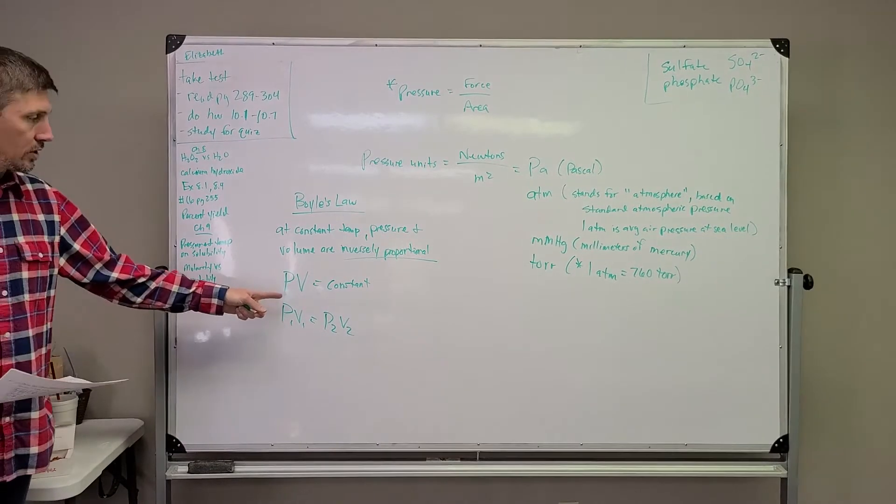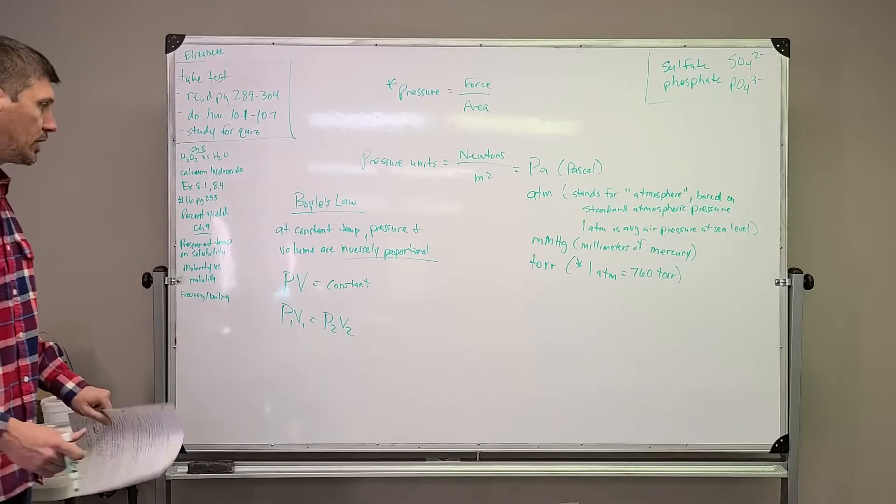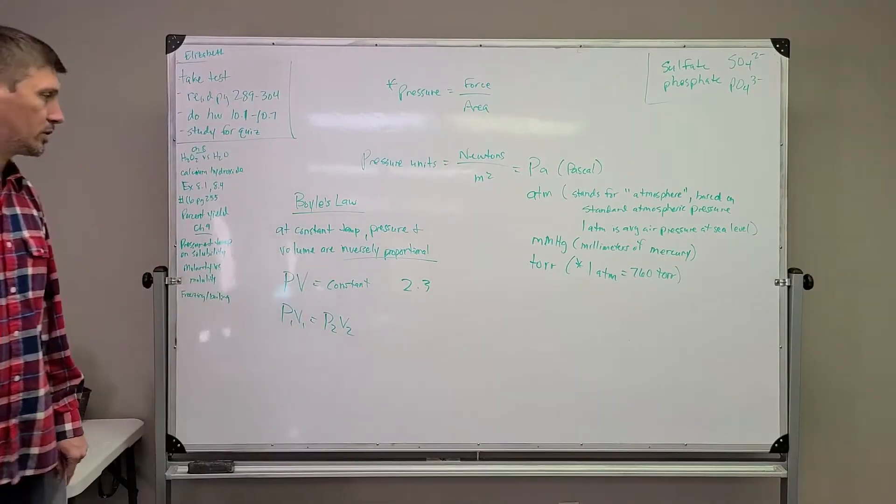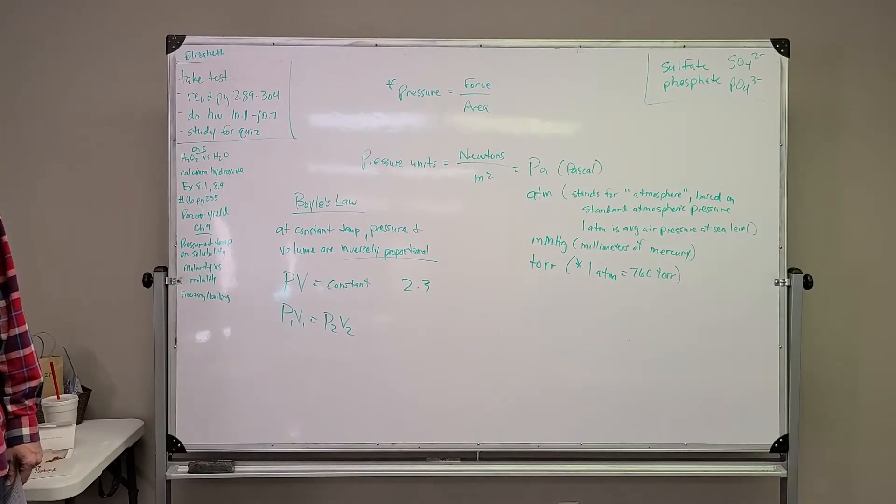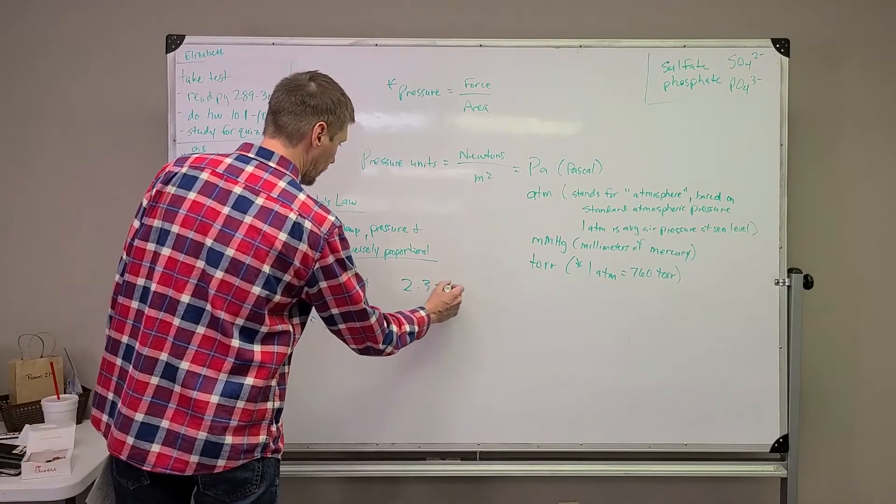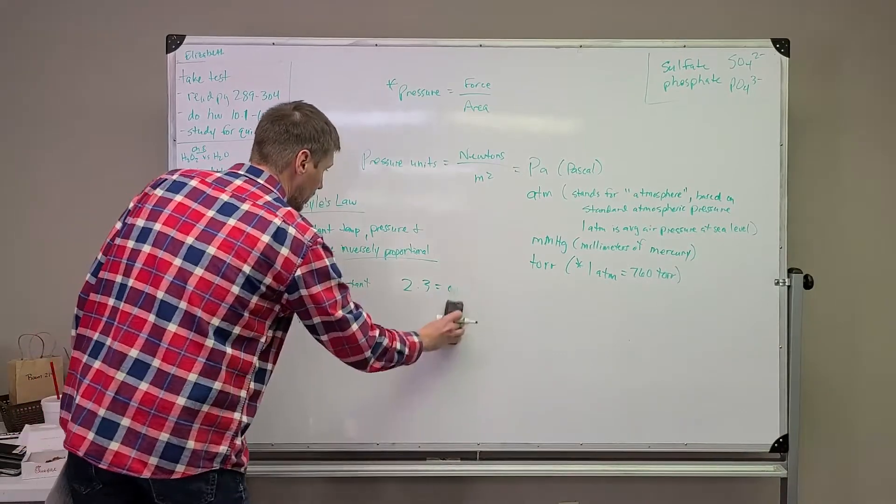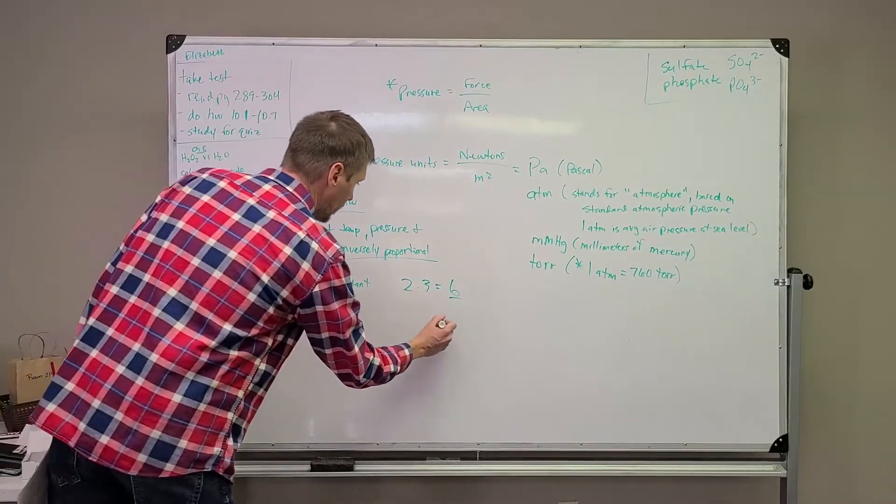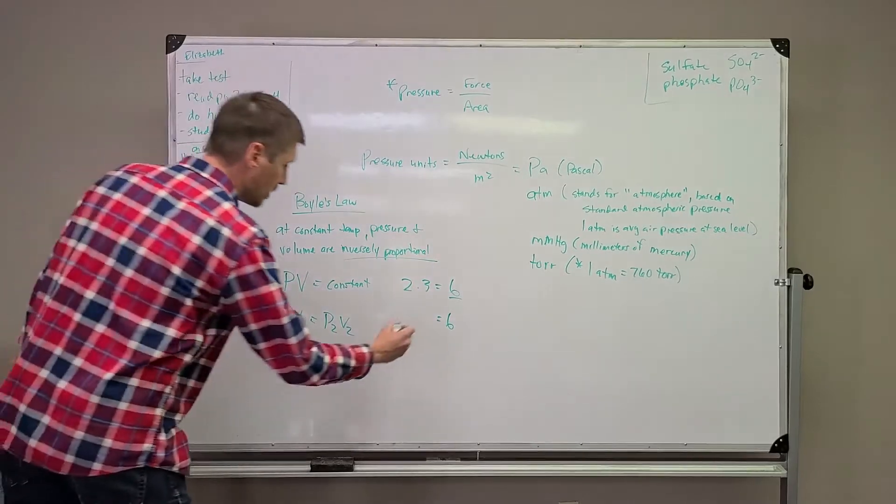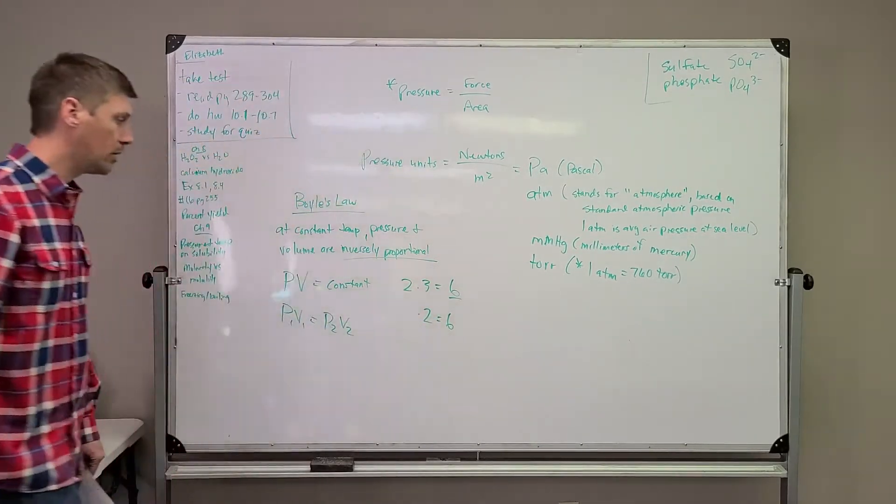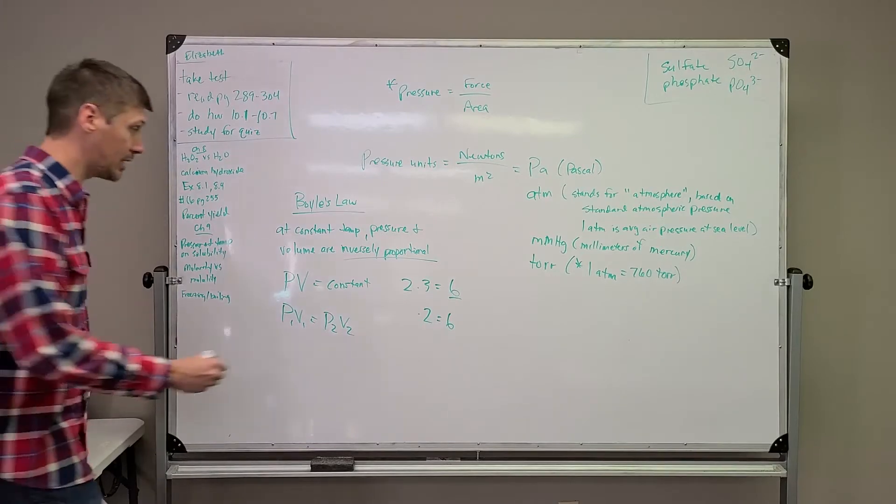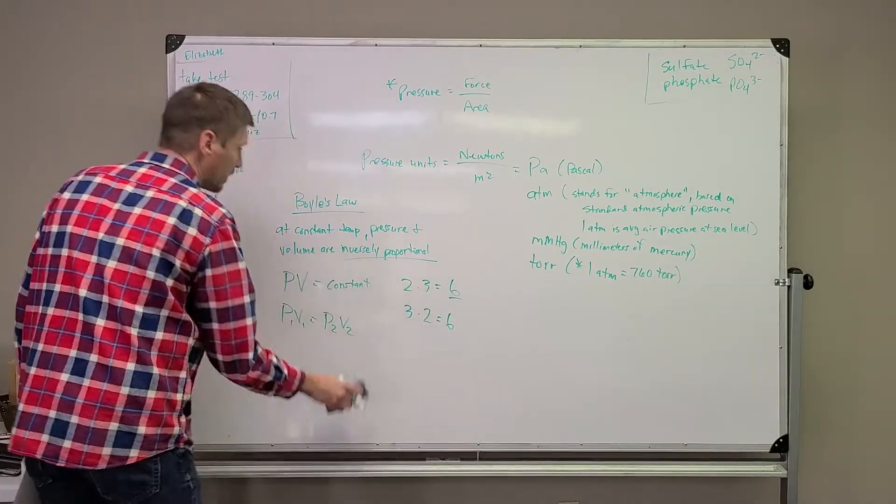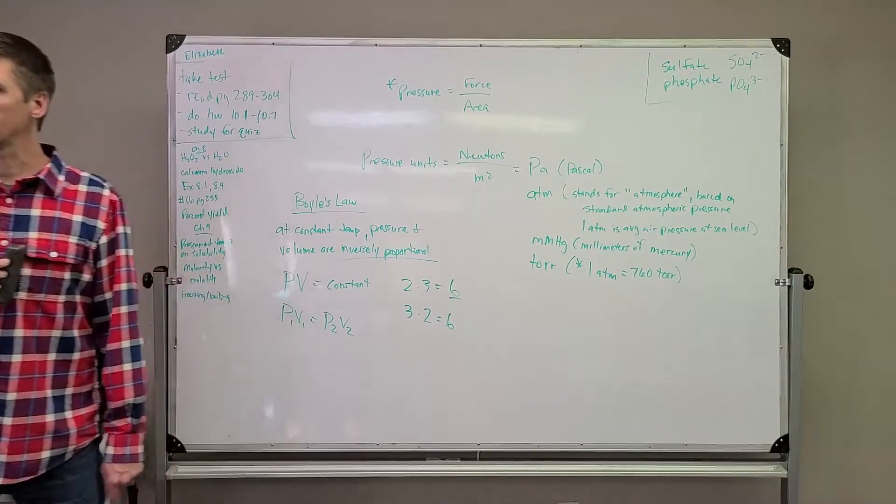Let's say pressure is two ATMs and volume is three liters. If that equals a constant, two times three equals six. If this number can't change, then under a different set of conditions, if the volume now is two, if the volume goes down, then what happened to pressure? In order for it to still equal six, pressure had to go up. So you see that as one goes up, the other one has to go down if they're equal to a constant. So they're inversely proportional to one another.